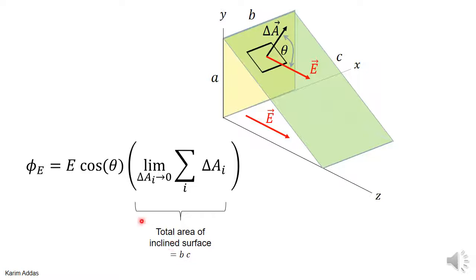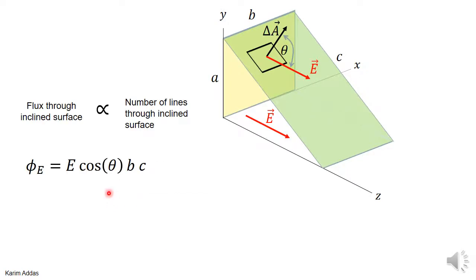We replace the sum with B times C, giving us the flux through the inclined surface equal to E times cosine theta times B times C. This is proportional to the number of field lines going through the inclined surface. Now we need to compare this with the flux through the back surface.